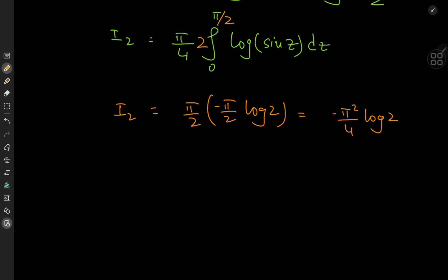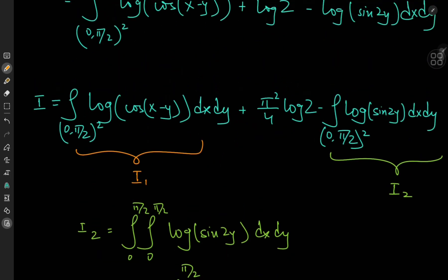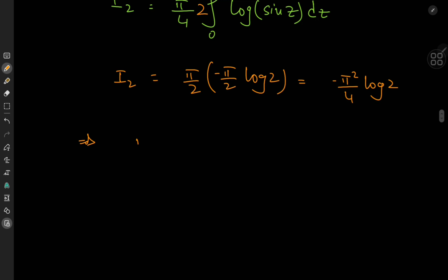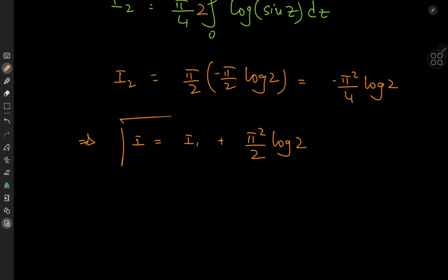And if you look back at the target integral I, we have this factor of π²/4 log 2 minus I₂, and I₂ already has a negative sign as its result, so that's positive. This implies that the target integral I equals I₁ plus twice of π²/4, which is π²/2 times log 2. And now for the evaluation of I₁ — I₁ is a pretty cool double integral in itself.